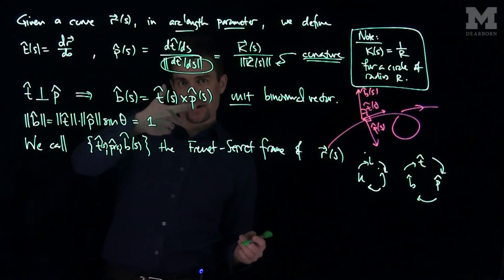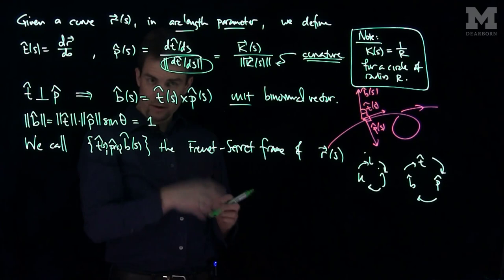And so what t, p, and b are is they're a copy of i, j, and k that moves along with the curve, so it preserves the orientation of the curve.